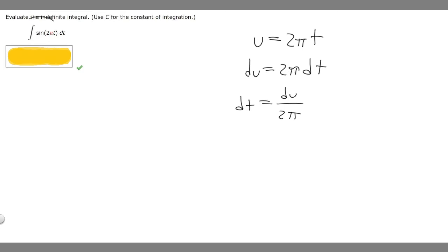Now that we got that, what we want to do is rewrite our integral. So what we do is we want to write sine and then we're replacing 2πt, which is our u. We're going to replace it with u.